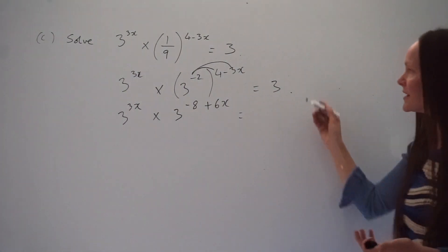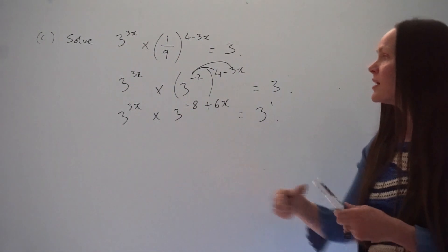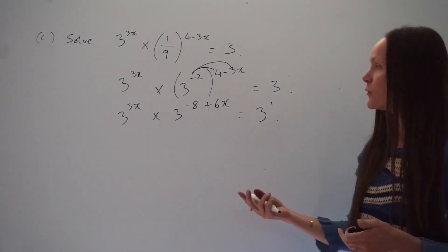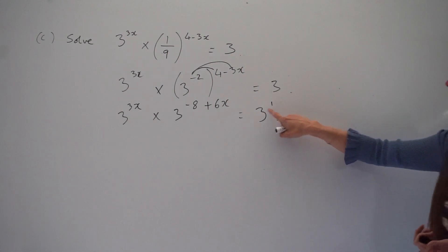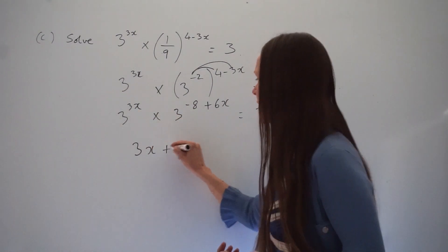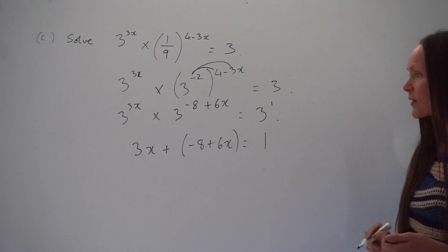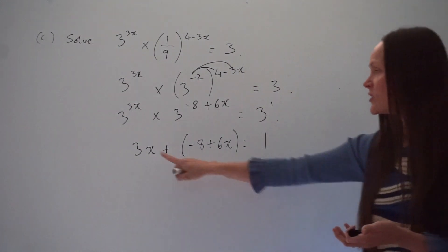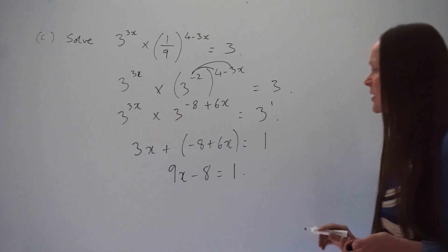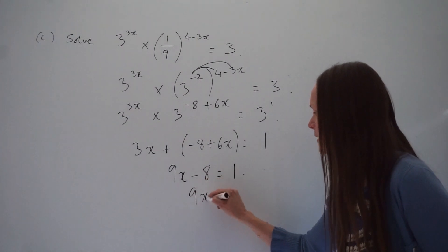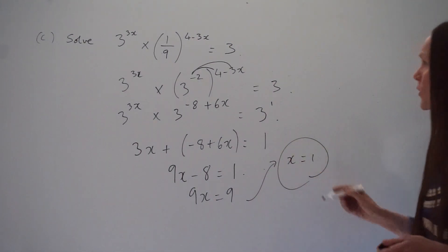Since we're multiplying the base-3 terms, we add their powers and set them equal to 1. So 3x plus negative 8 plus 6x equals 1. Simplifying: 9x minus 8 equals 1. Adding 8 to both sides: 9x equals 9. Dividing both sides by 9 gives x equals 1. That is the value of x.